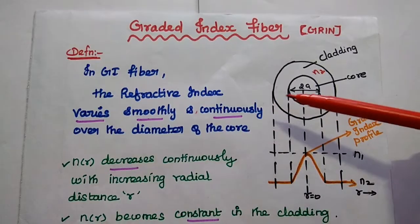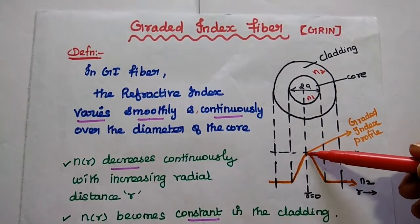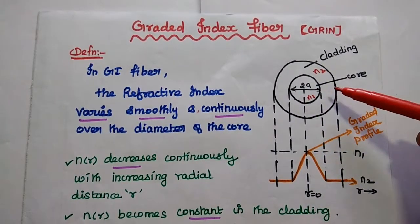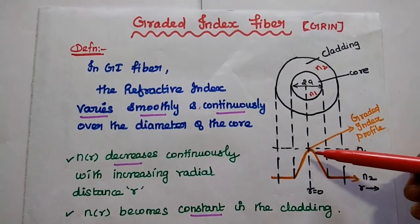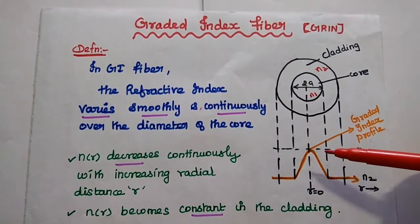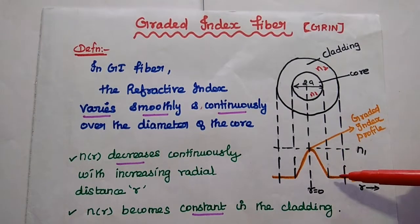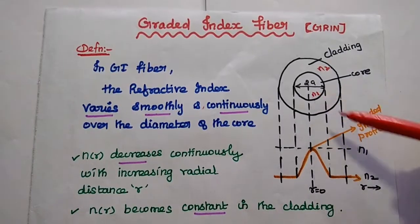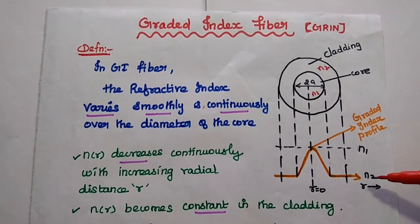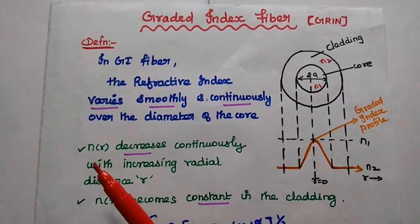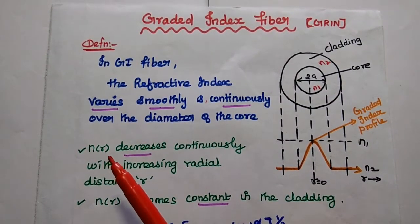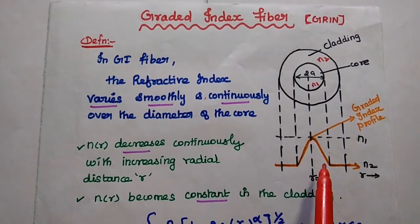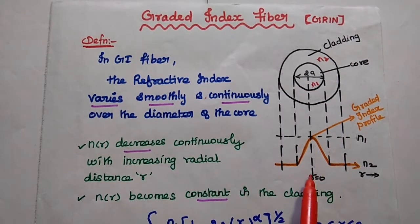Graded index fiber is the type of fiber in which the refractive index varies smoothly and continuously over the diameter of the core. Here the graded index profile varies continuously and smoothly over the diameter of the core. 2A is the diameter of the core, N1 is the refractive index of the core, and N2 is the refractive index of the cladding. The graded index profile N(r) as a function of radial distance decreases continuously with increasing radial distance from the core axis.